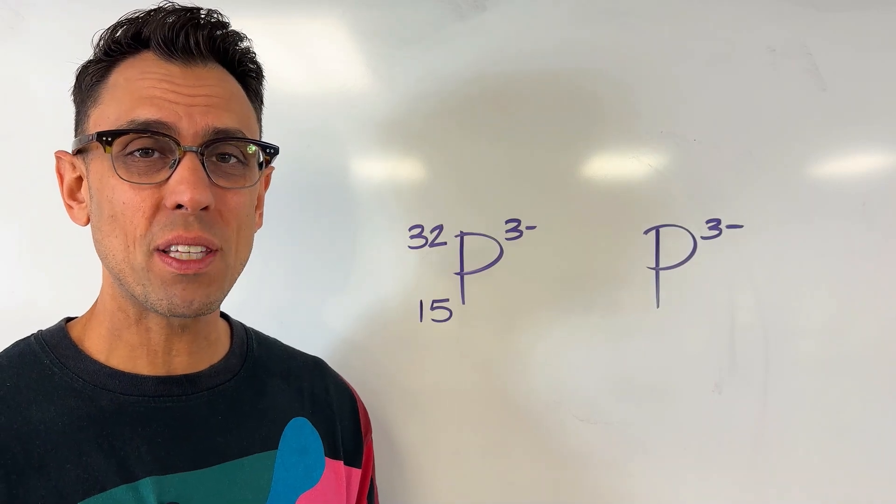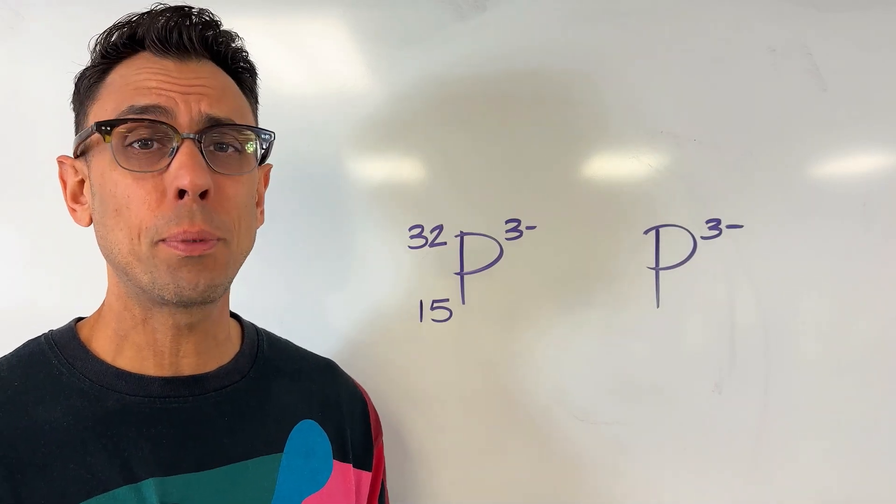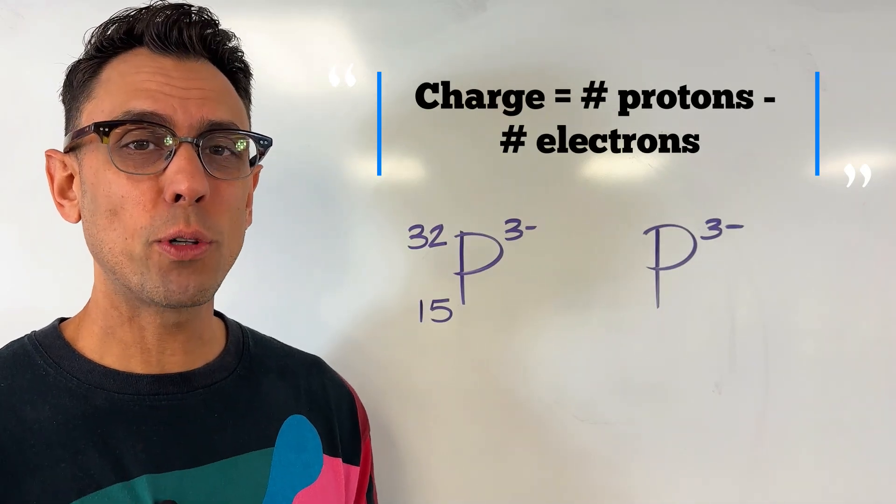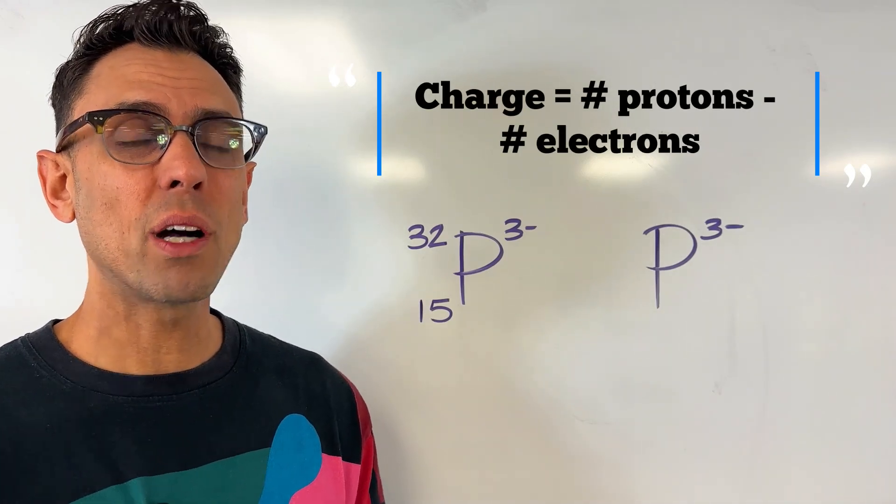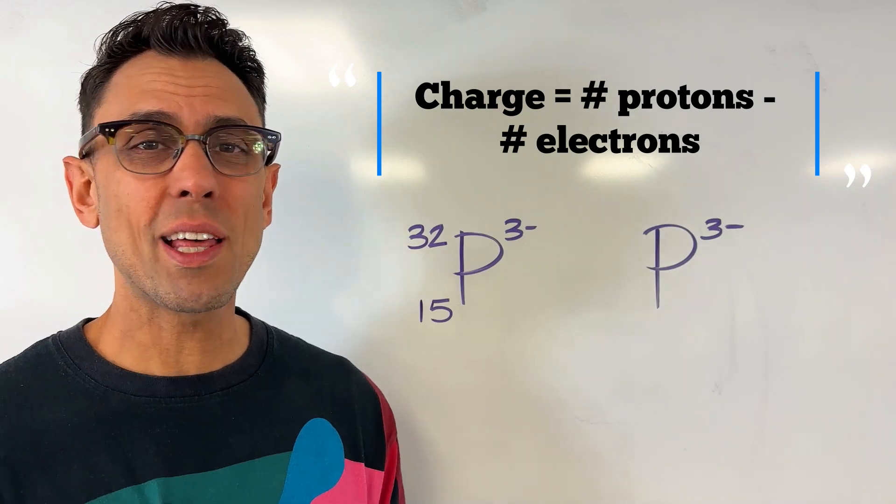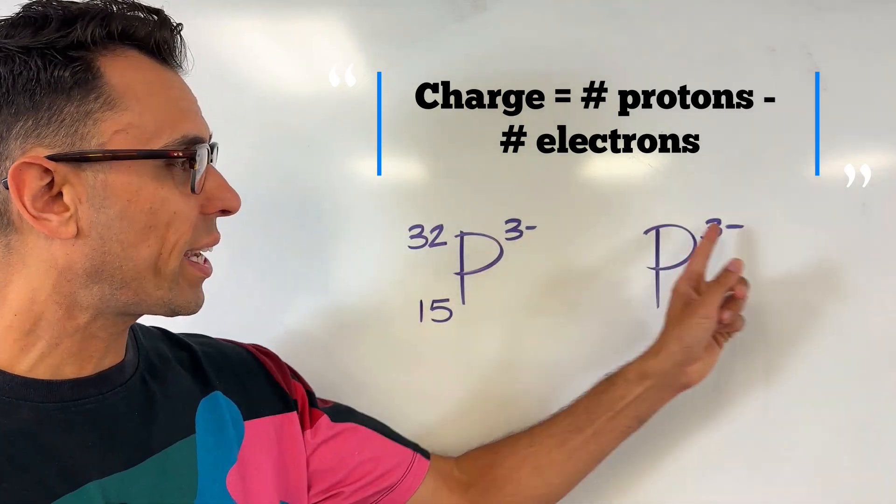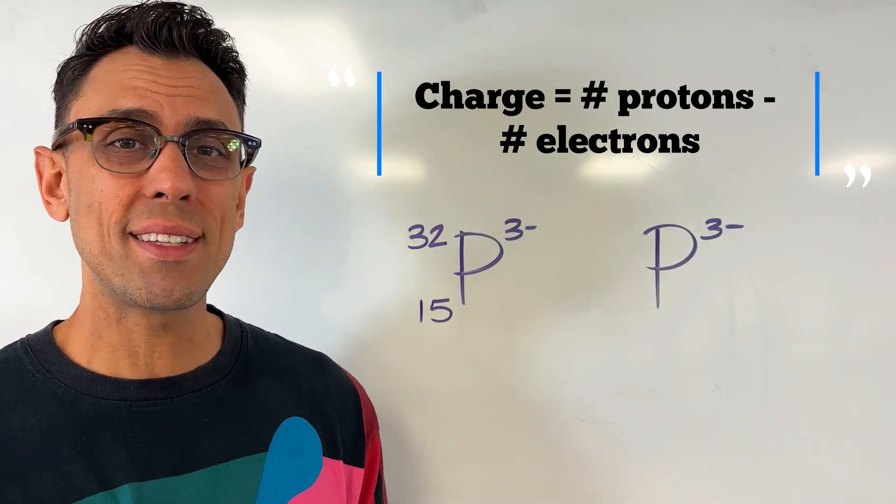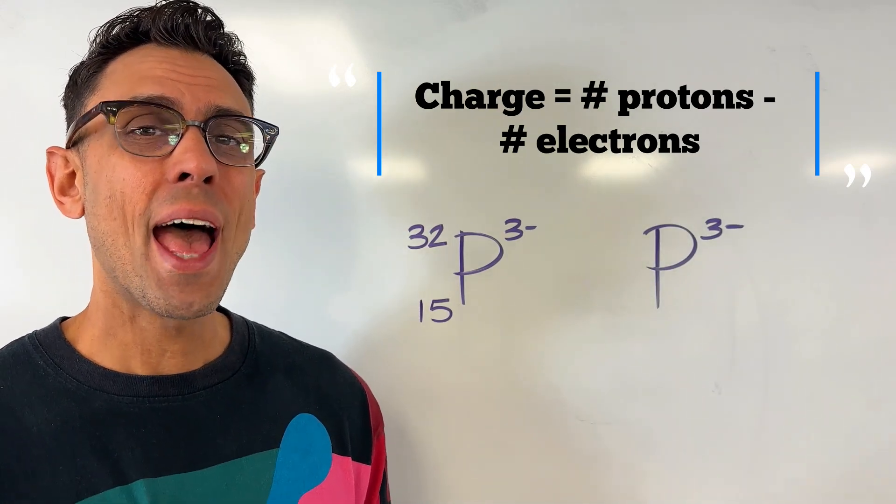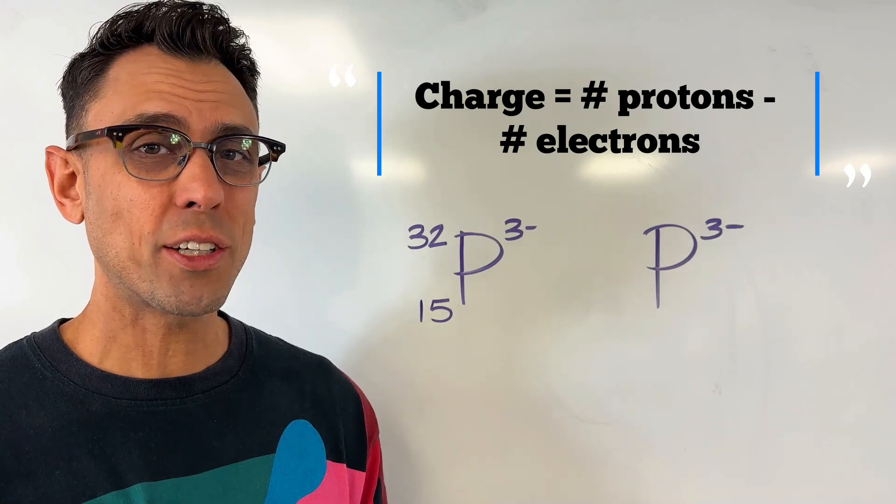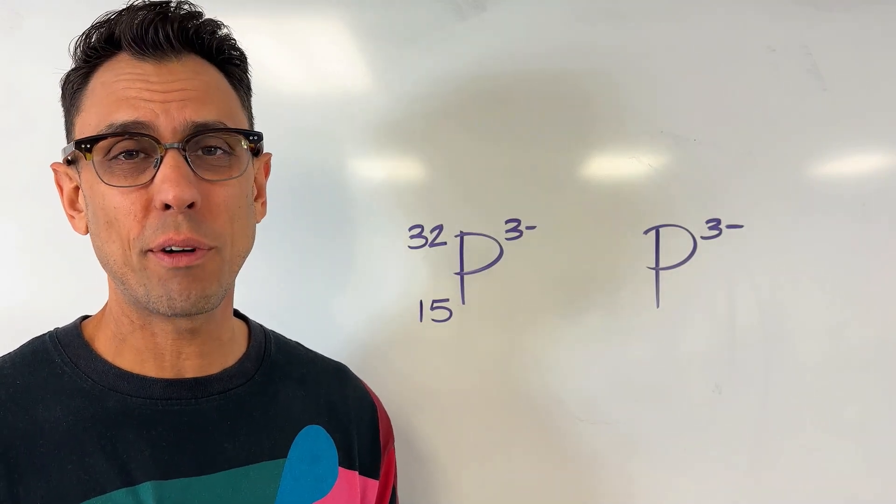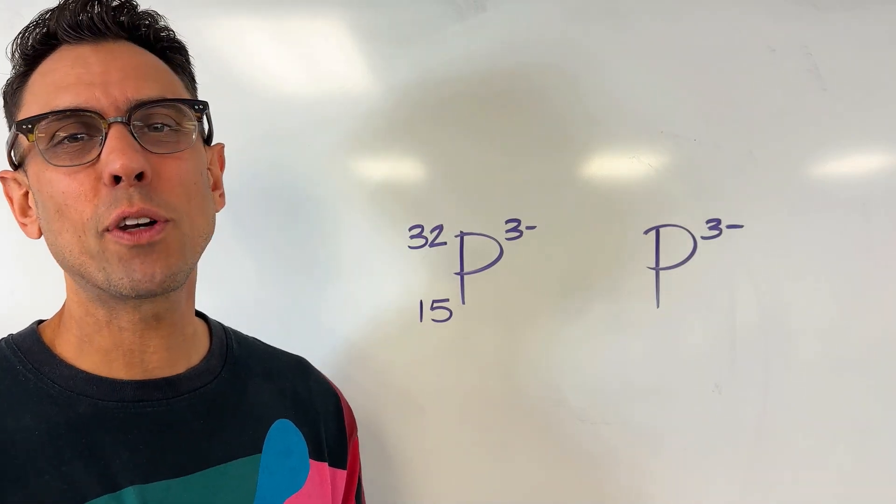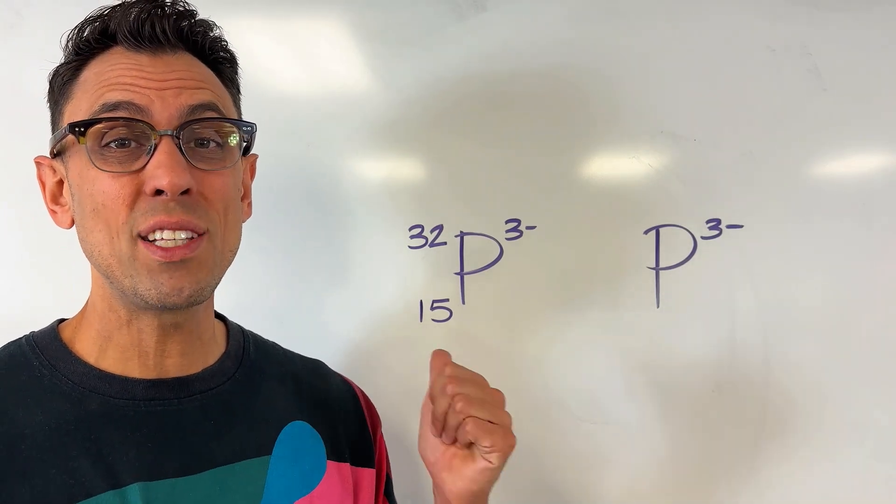Well, we're going to use a very specific calculation using some simple algebra. The charge is equal to the number of protons minus the number of electrons. That's right, I'll say that one more time. The charge, which you see here written in the upper right hand corner, is equal to the number of protons that this atom has, and from that number we subtract the number of electrons. Now of course we're going to be solving for the number of electrons, so we're going to have to do some simple rearrangement to get our answer. Okay, let's figure out the number of electrons for these phosphorus atoms.